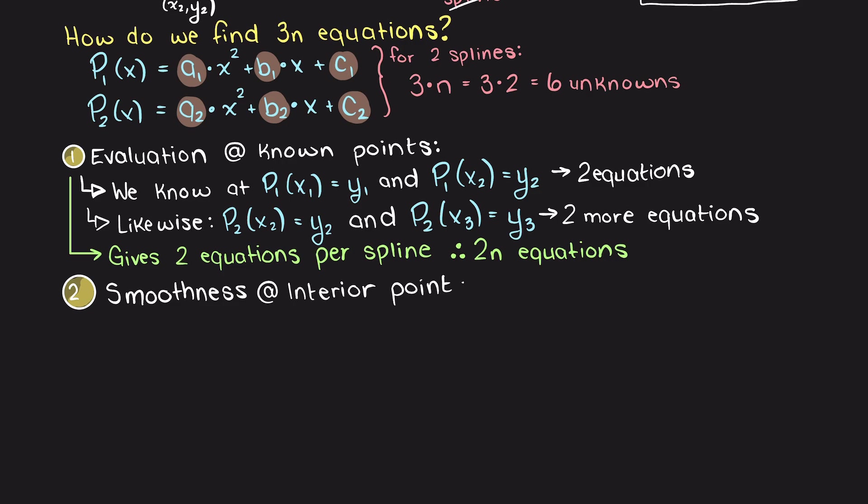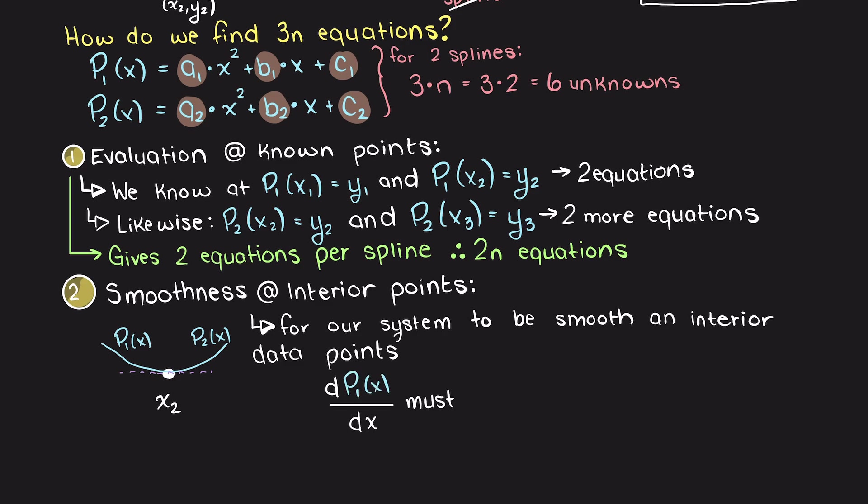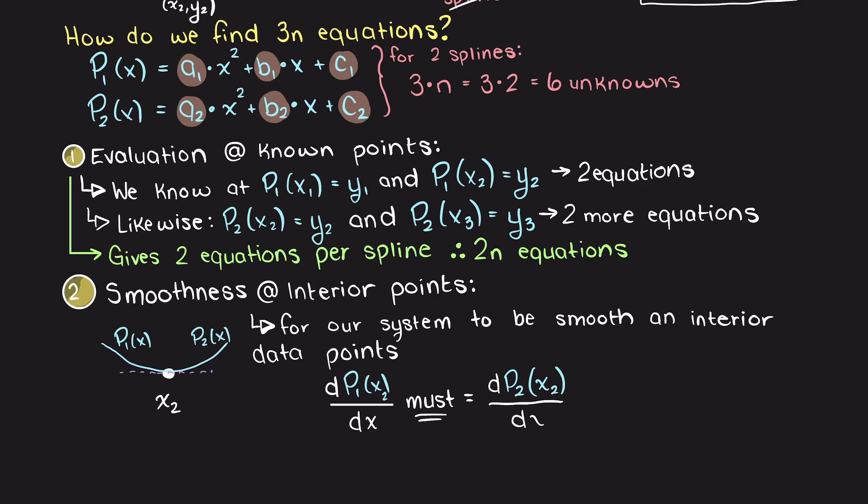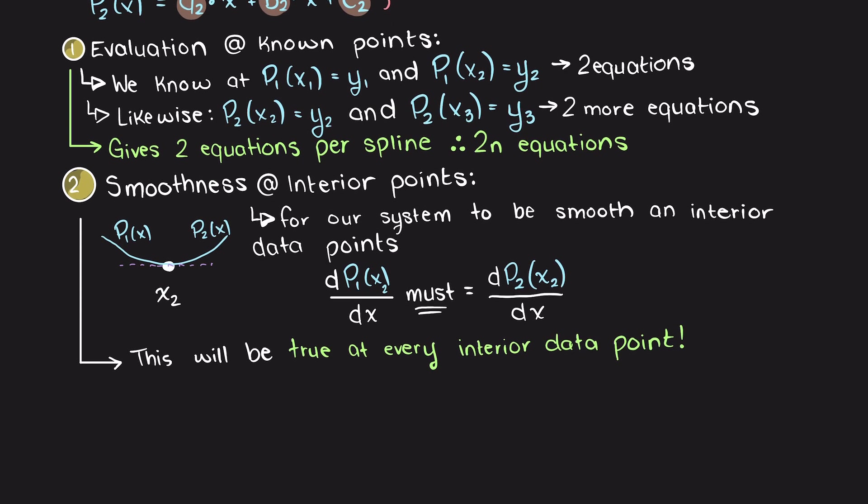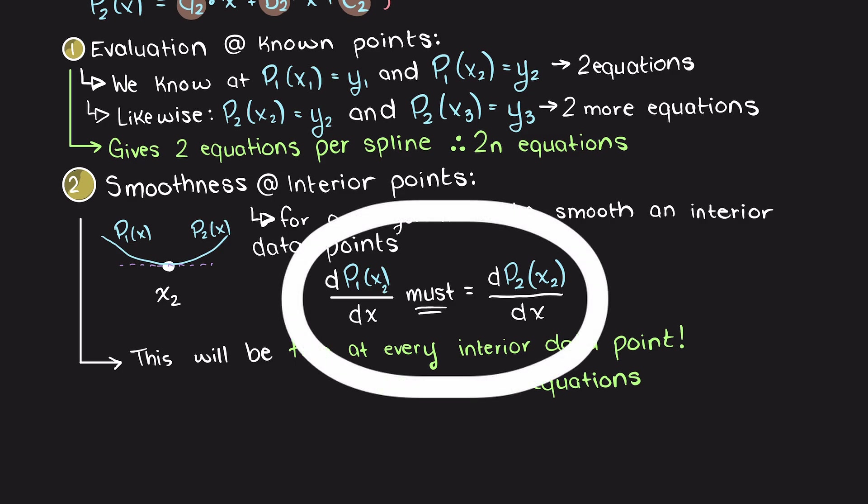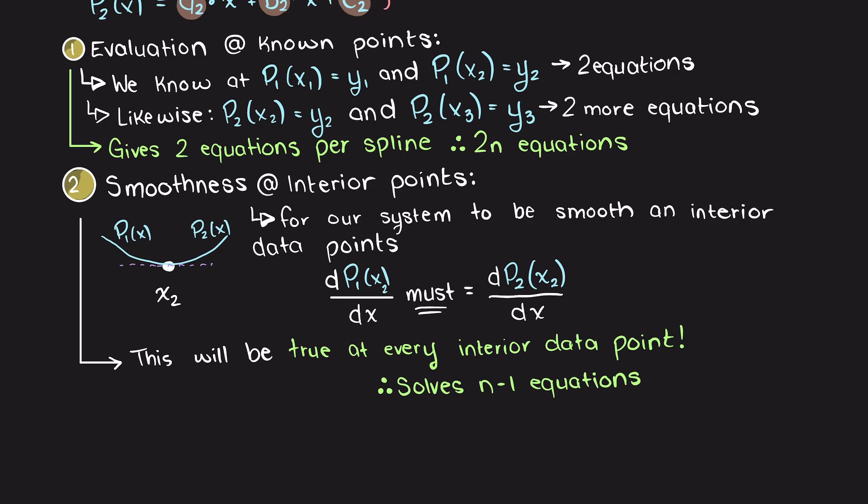Next we can look at our interior data points, meaning our non-terminal data points. Isn't it true that if we wish to have a smooth function at every internal data point, our slopes will be equal where they connect? Therefore, at every internal point along our region of interpolation, we are going to be able to find equations which would look something like this, in which you would plug in the above equations, take the derivative, and then solve. In our above example, this gives us one equation, therefore we are still missing one.